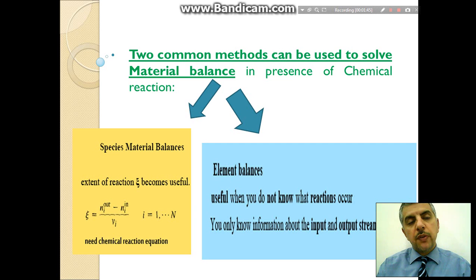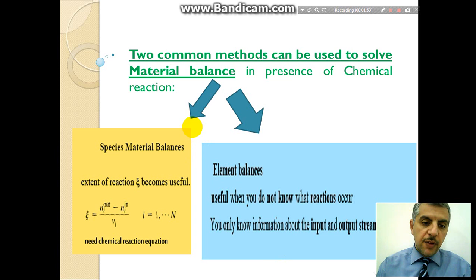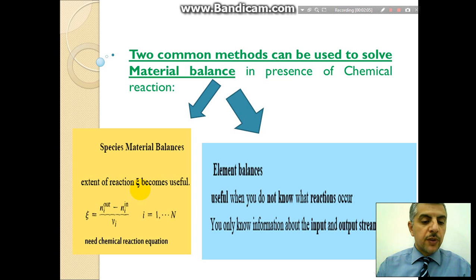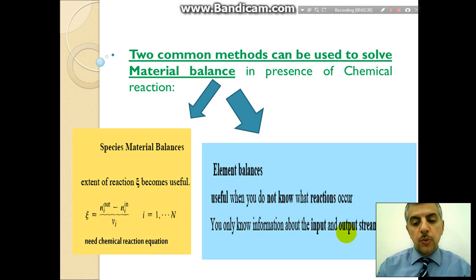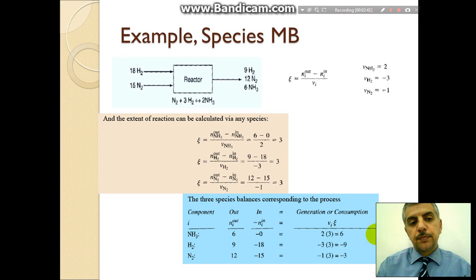There are two common methods for solving material balance problems in the presence of chemical reactions. The first is the species material balance, and the second is the element material balance. In the species method, we need the extent of reactions — defined as the number of moles out minus number of moles in for a species, divided by the stoichiometric coefficient. This method requires the chemical reaction equations, while the element material balance does not.